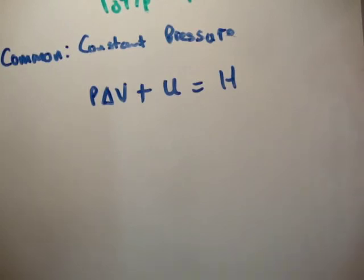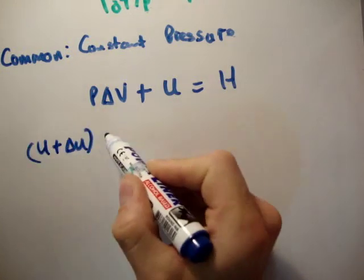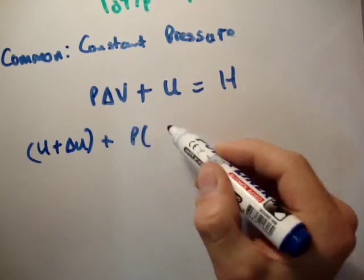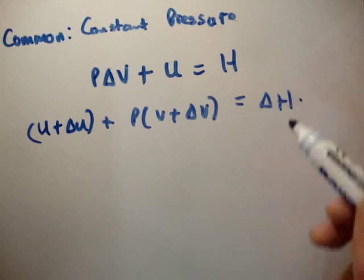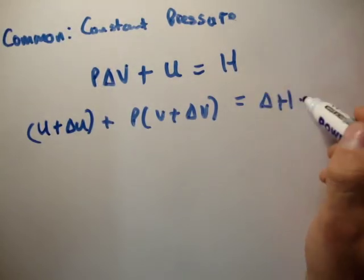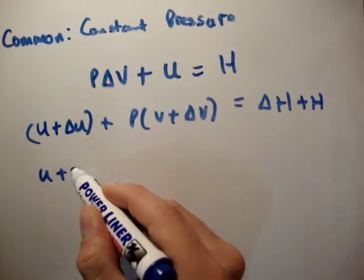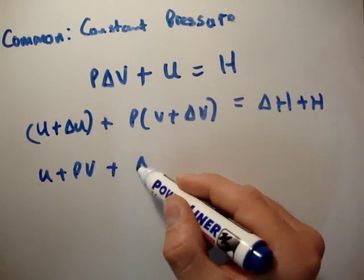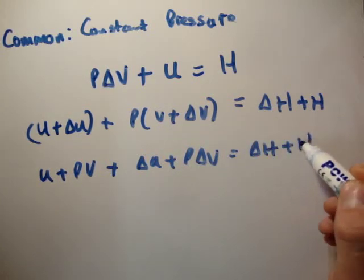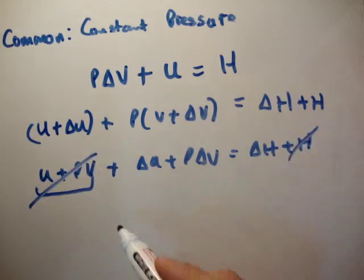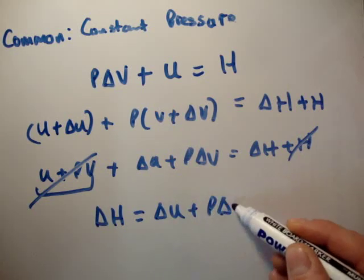How do I get the change in enthalpy? The change in enthalpy is going to be: U plus delta U, plus P times (V plus delta V), equals H plus delta H. You can rearrange this as U plus PV plus delta U plus P delta V equals delta H plus H. We see that U plus PV is H, so those cancel, and we find that delta H — the change in enthalpy — is delta U plus P delta V, as we would expect.